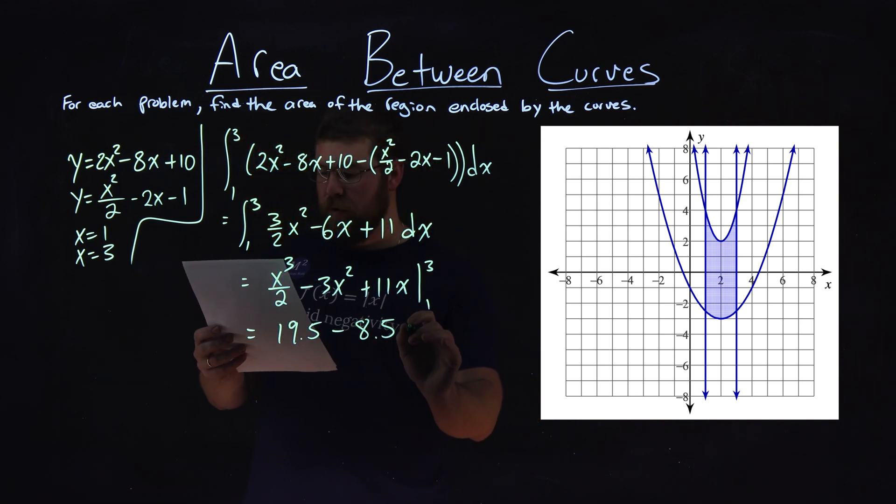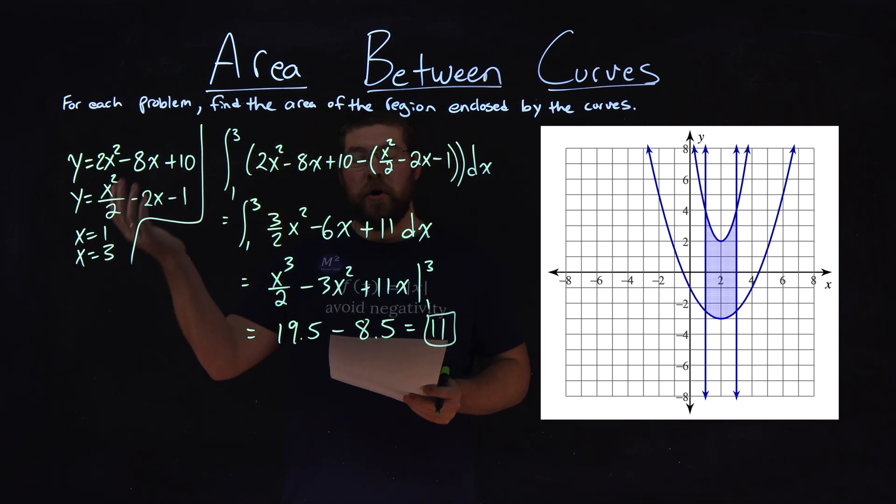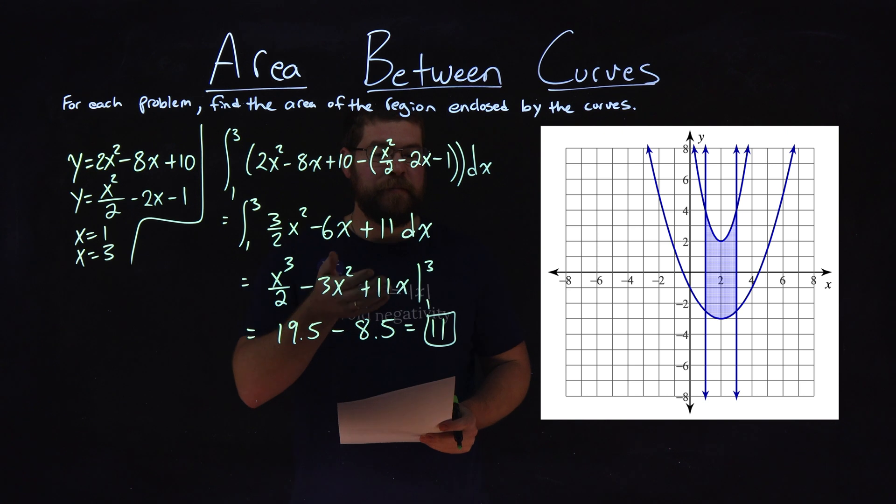19.5 minus 8.5 comes down to be 11. So the area between the curves here, our final answer, is 11.